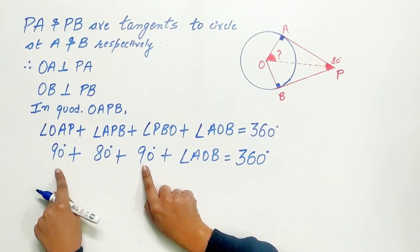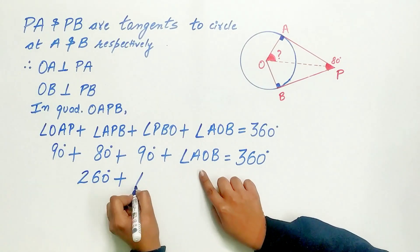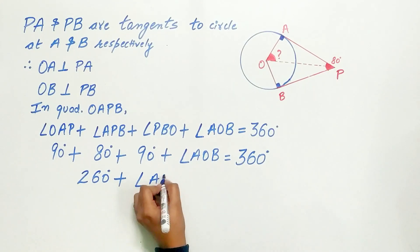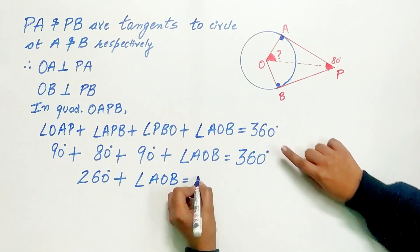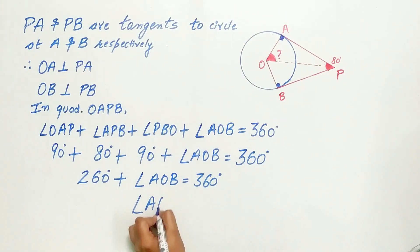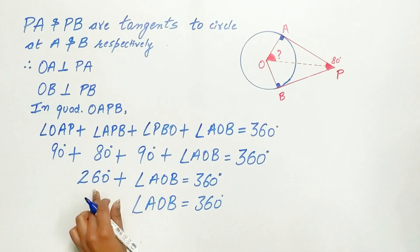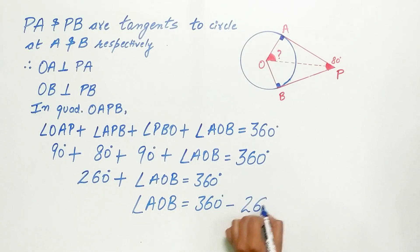90 degree plus 90 degree plus 80 degree is 260 degree. Plus angle AOB is equal to 360 degree. Angle AOB is equal to 360 degree minus 260 degree which is equal to 100 degree. Exactly.